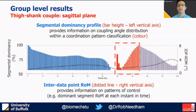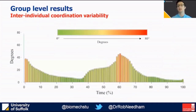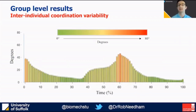We also see an in-phase coordination pattern at the transition, so overall replicating the previous results at the group level. We can also use either bar height or colour mapping to show the inter-individual coordination variability, which again is greatest at around movement initiation and the transition between phases.